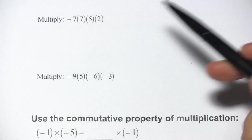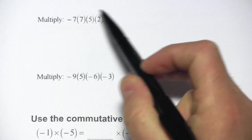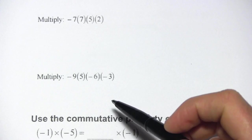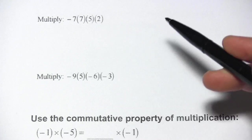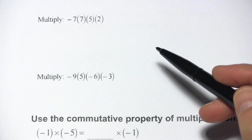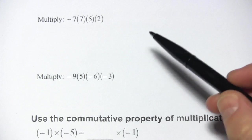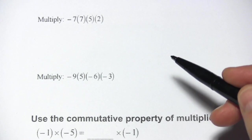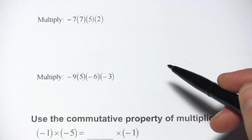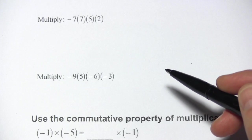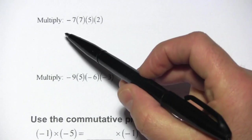In these problems we're multiplying and we have a bunch of numbers to multiply and there may be one or more negative signs. We're also going to talk about one of the properties of multiplication: the commutative property. But let's take these one at a time.